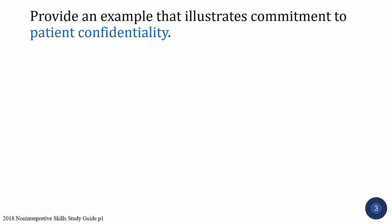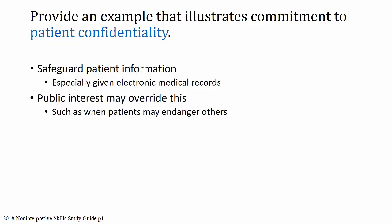Commitment to patient confidentiality means safeguarding patient information in whatever format you receive it — whether verbal or electronic — with safeguards in place to preserve that safety. There are times public interest may override this, such as when patients may endanger others or themselves, usually specified clearly and state by state. An example: what safeguards are you using for electronic patient information you take out of the hospital to work from home?